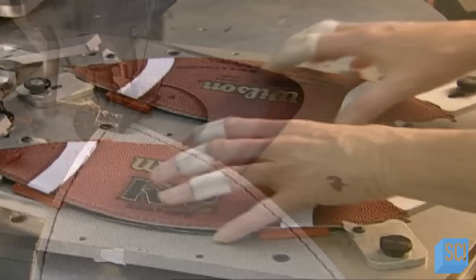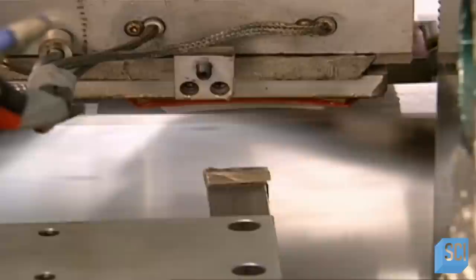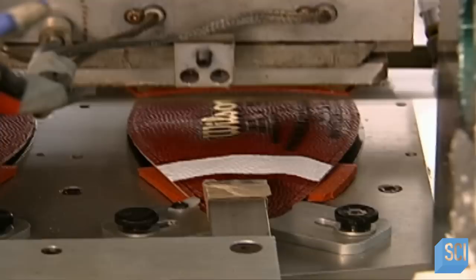Then she places them in a die that positions them for another set of markings. These four white lines will form two stripes when the sections come together. This is purely aesthetic and varies according to the football model.